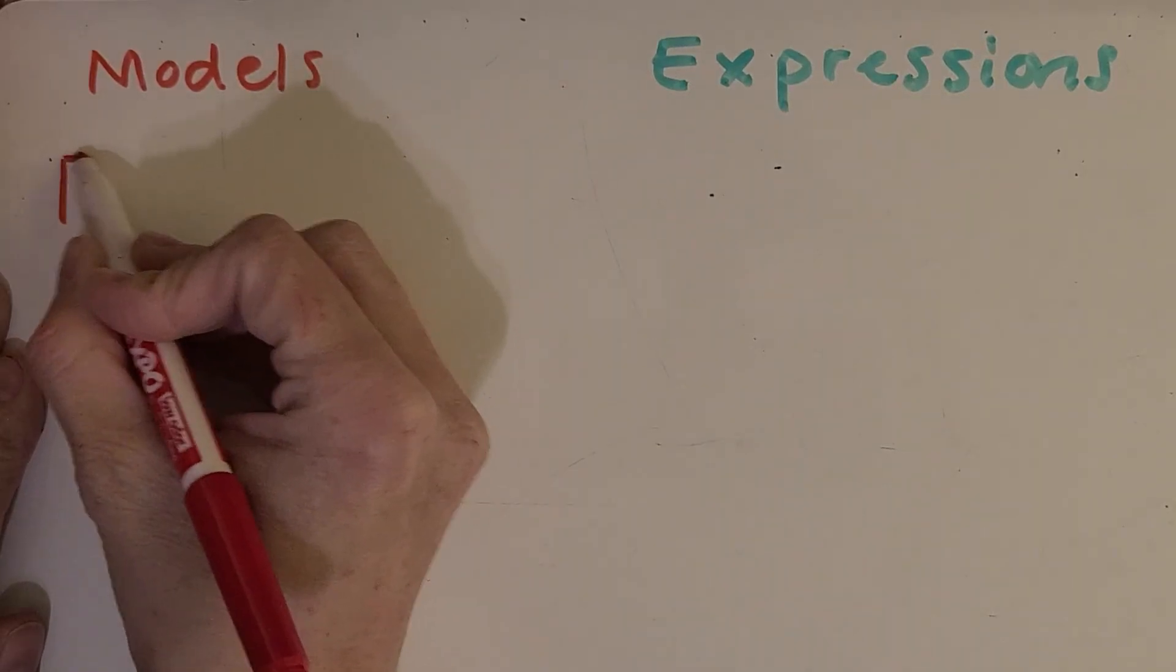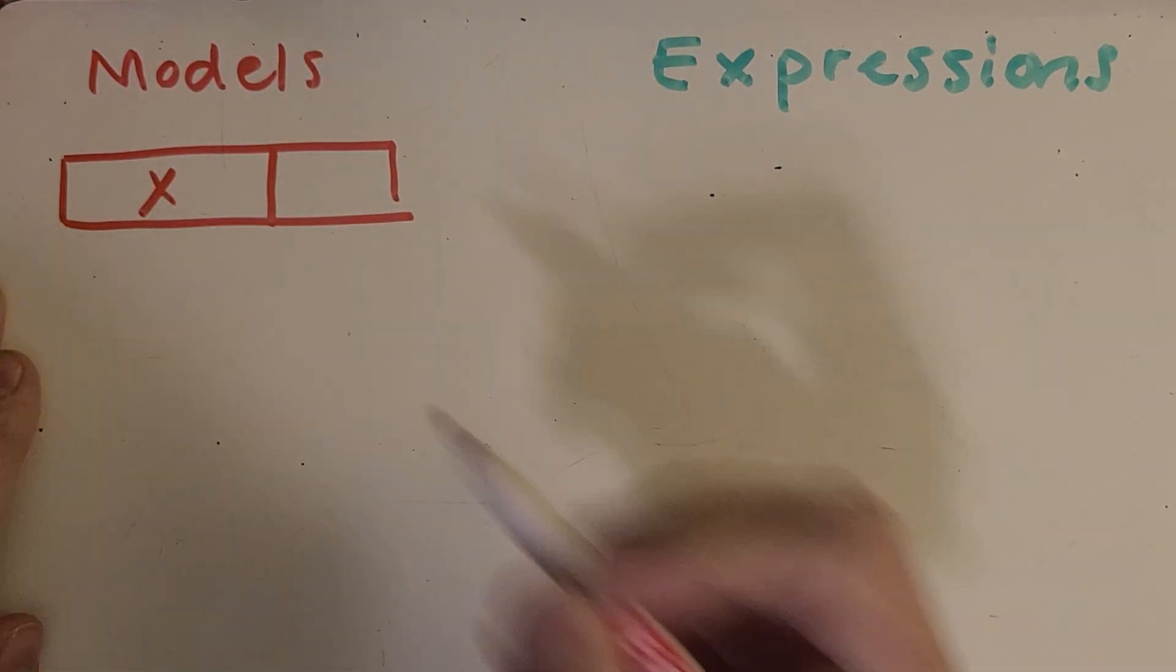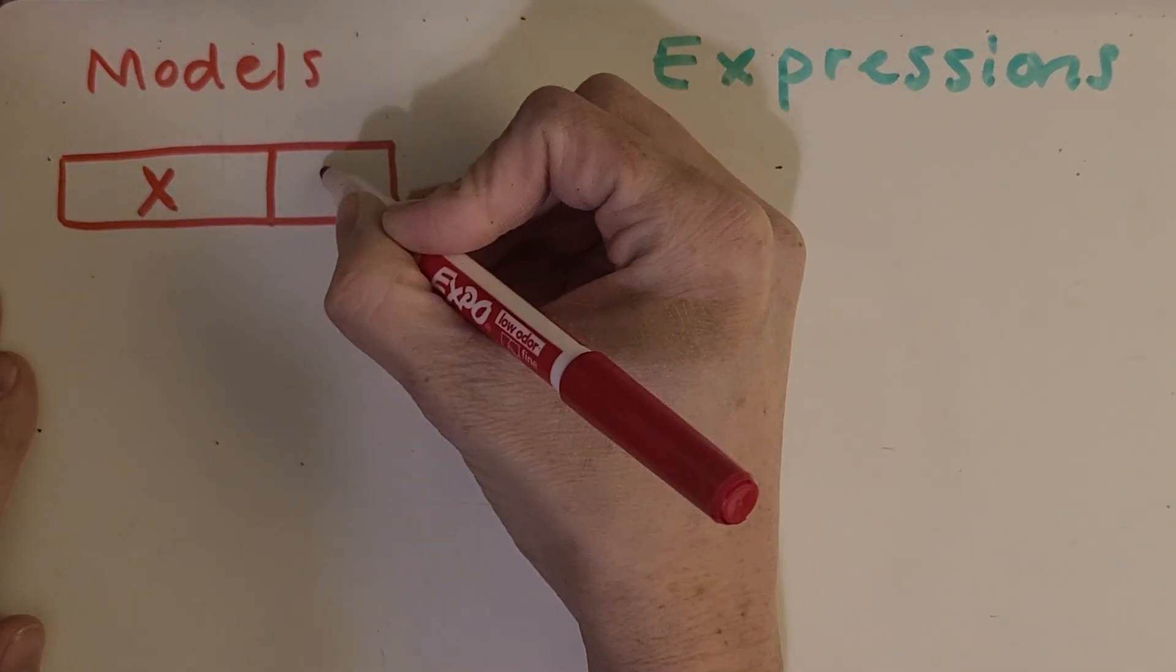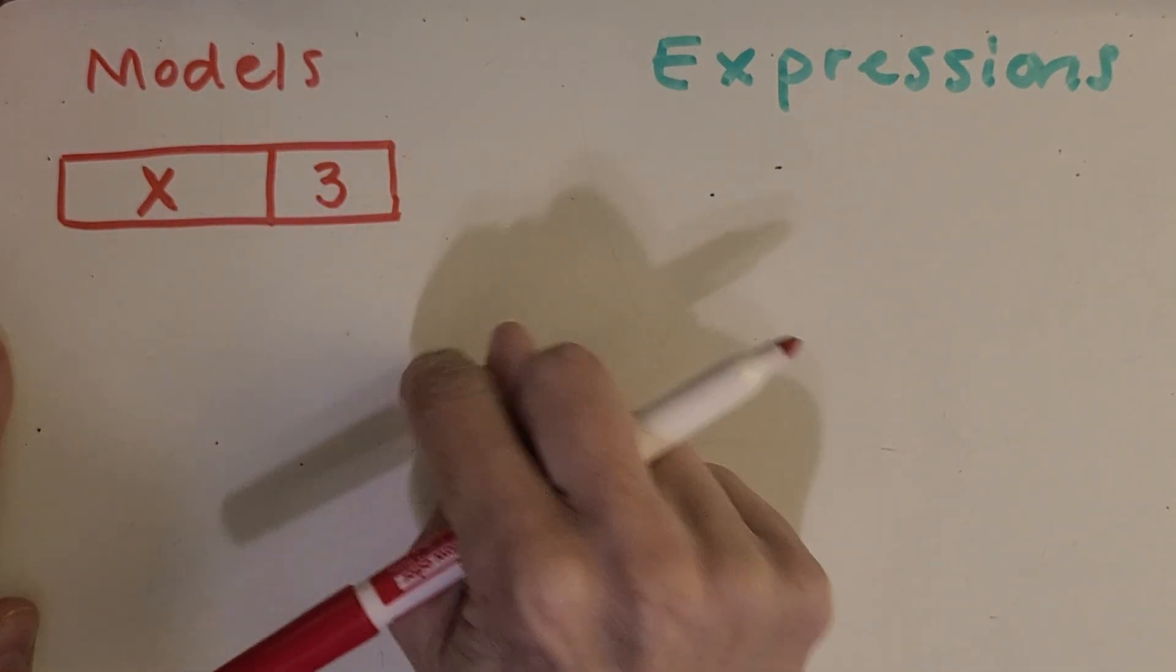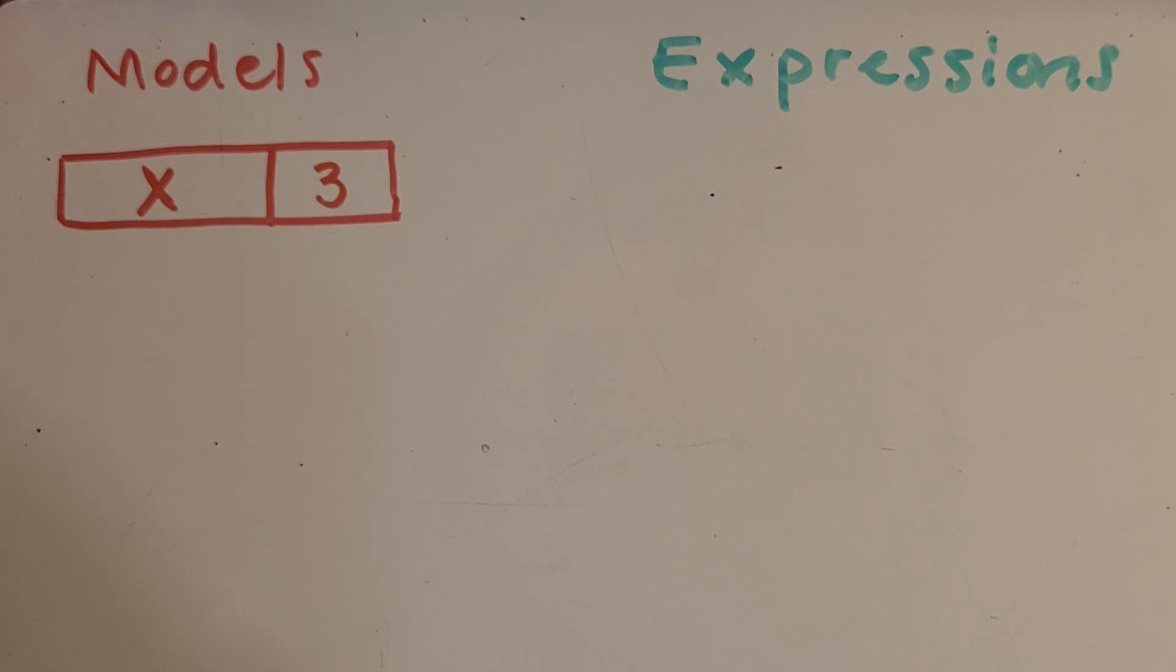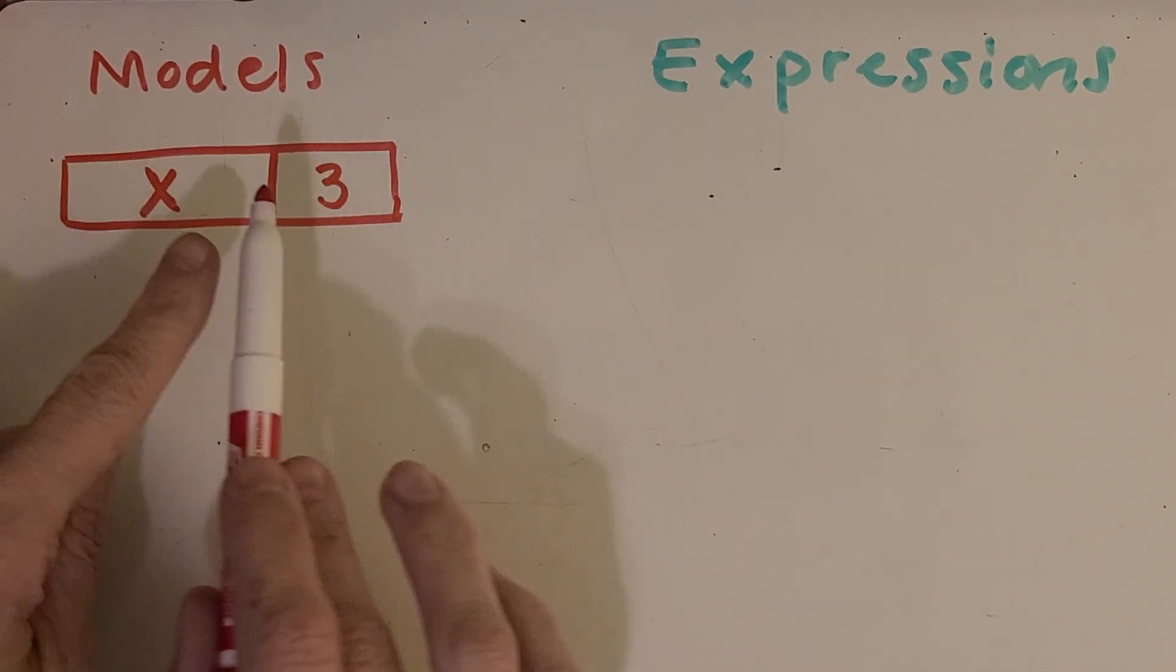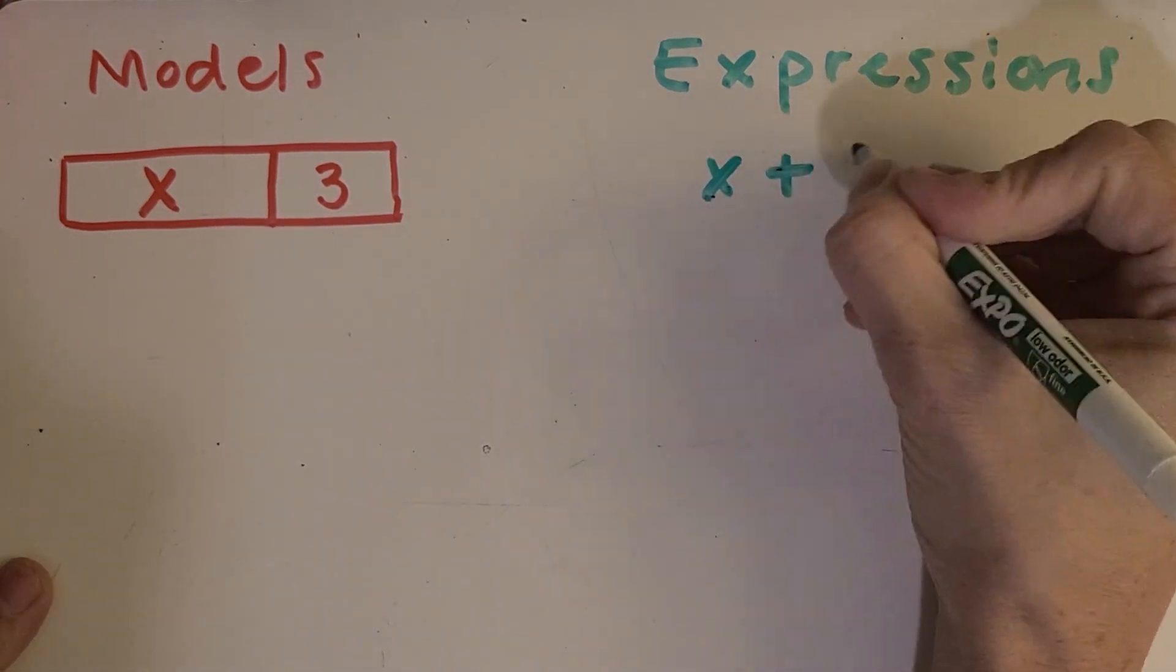Okay, so let's start with a simple model. I'm going to put the letter X to represent that unknown amount that we don't know yet. And then this portion over here, I'll put a three. So what operation do you think this is showing?